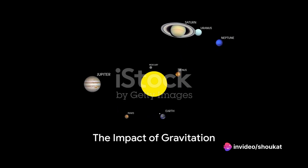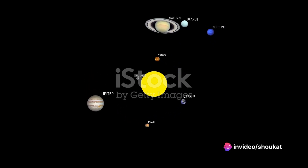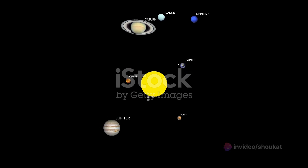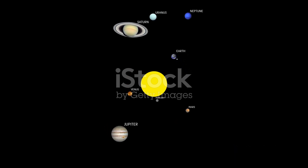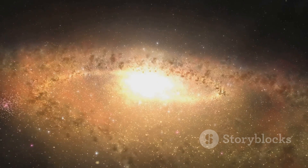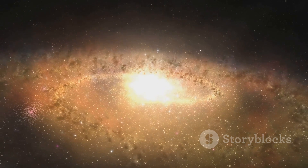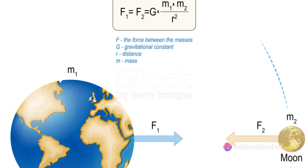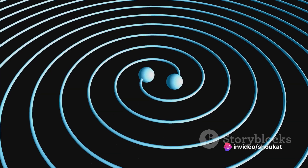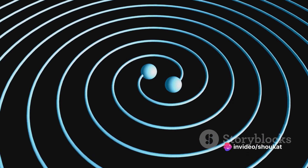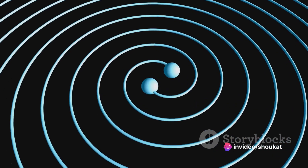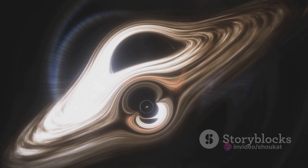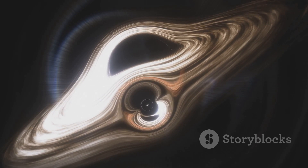To summarize, gravitation is a fundamental force that attracts two objects towards each other. It's the reason why objects fall to the ground when dropped, why planets orbit the sun, and why galaxies form. It is governed by Newton's law of universal gravitation and Einstein's theory of general relativity. Gravitation is not just a force, but a curvature in the fabric of space and time.